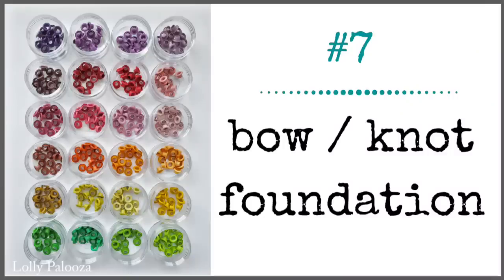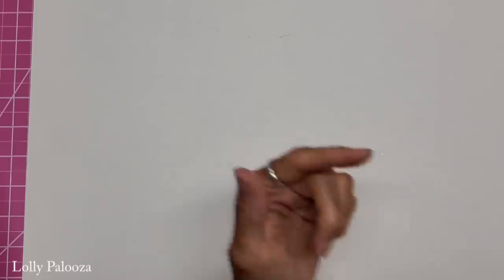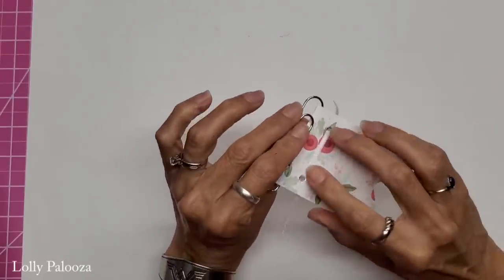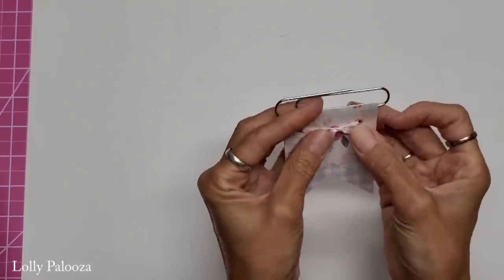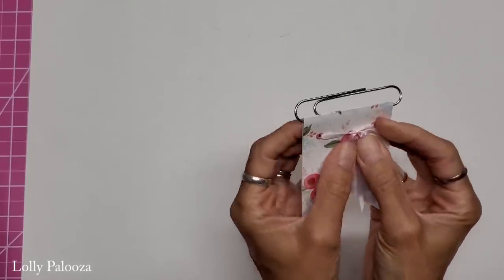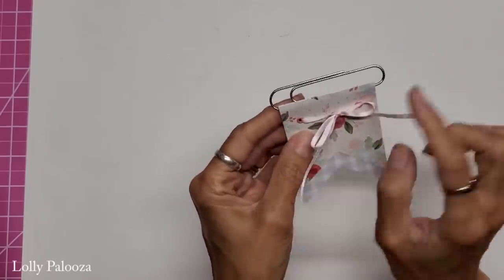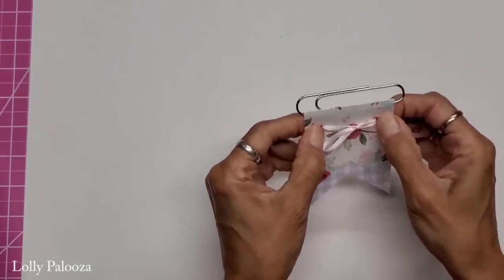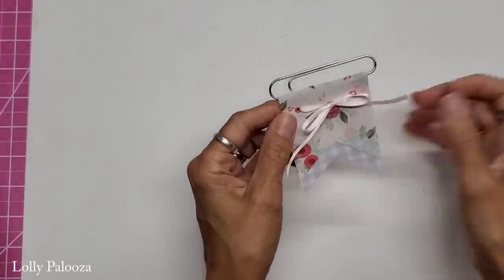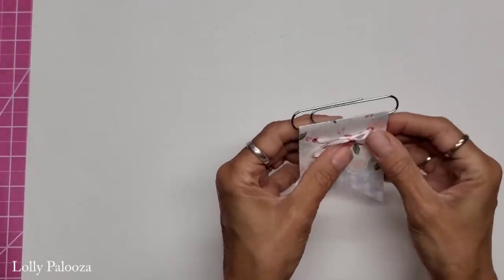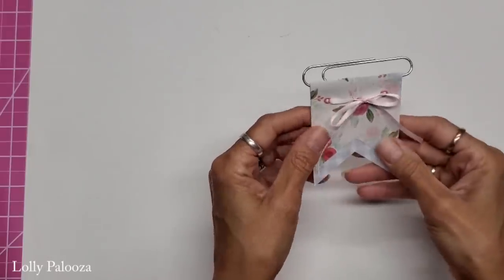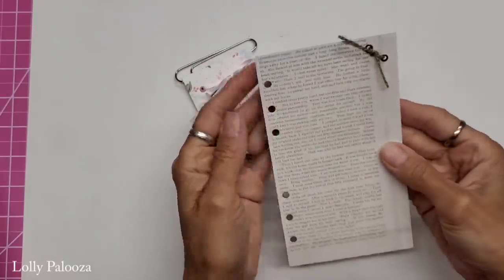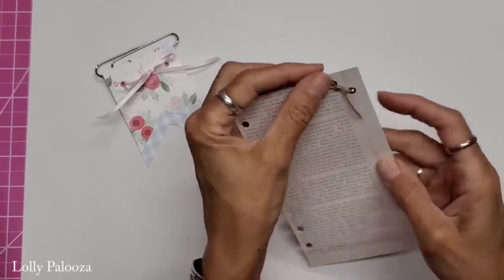Number seven, the foundation of a bow or a knot. A lot of times we tie ribbons around something, but I have placed two eyelets in this paper clip and I'm pulling the bow away so you could see it right there. That is where I tied my ribbon through for the bow. So it's just a foundation, it's a place to secure the ribbon in without necessarily just making a bow and gluing it on top. I think this adds a whole lot more interest than just gluing any old bow any old place on the project.